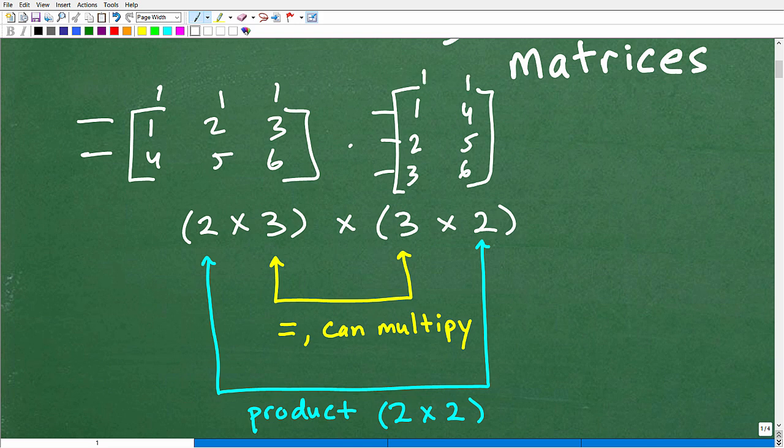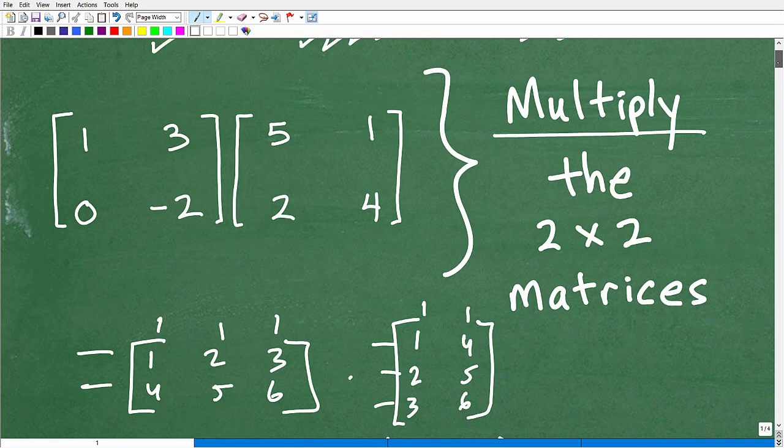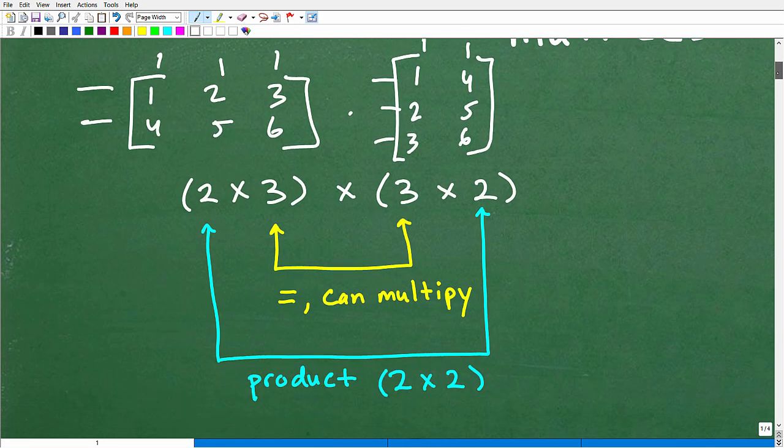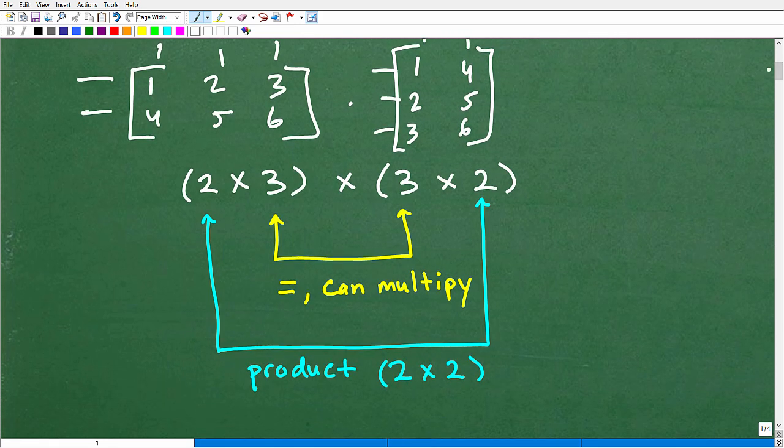When you're dealing with matrix multiplication, the first thing is you have to determine, can you actually multiply the matrices? Now, we are dealing with nice 2 by 2 matrices here. And what I'm teaching you is going to apply to any matrix. 3 by 3. We're going to be learning the operation. We just happen to have 2 by 2 matrices. But let's just quickly review.